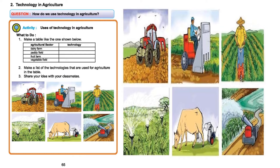If you look on the right side, there are pictures of the tractor, cultivator, planter, sprinkler, irrigation pump, harvester, and milking machines. With the help of these devices, we are really improving day by day in our agricultural sector and increasing the quantity of our crops and production.